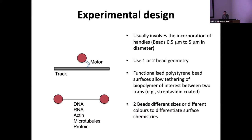Nearly all optical tweezer experiments are designed around beads — typically one micron but can be slightly bigger or smaller. You coat the bead with the molecule of interest and use either a one-bead system (for example a motor on a track with forces applied to it) or a two-bead system where you tether things between beads — DNA, RNA, actin, microtubules, or even proteins directly to look at conformational changes. Different bead sizes can carry different chemistries and colors to design the experiment.